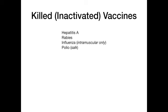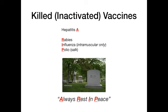To recap the two types of polio vaccines: the Sabin is live attenuated, and the Salk is killed. The mnemonic for killed vaccines is 'RIP' — rest in peace — because they're killed. 'Always Rest In Peace': A for hepatitis A, R for rabies, I for influenza (intramuscular), and P for polio. So killed vaccines always rest in peace — not that many to memorize here.